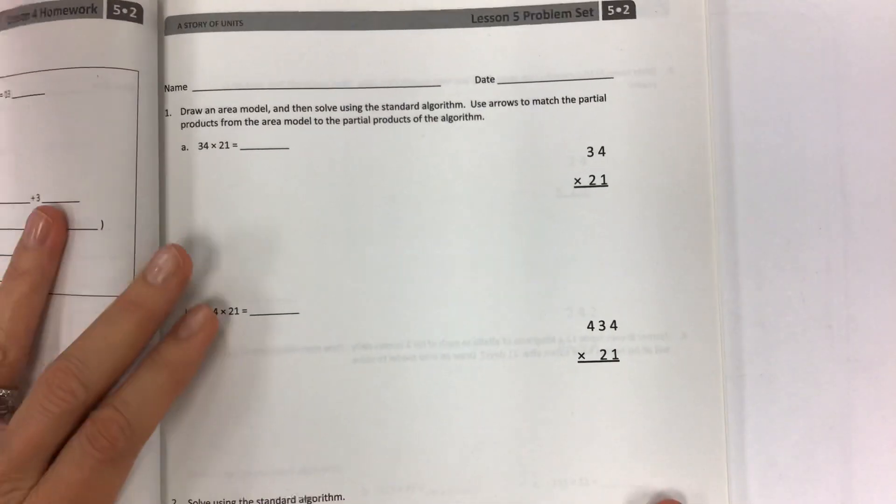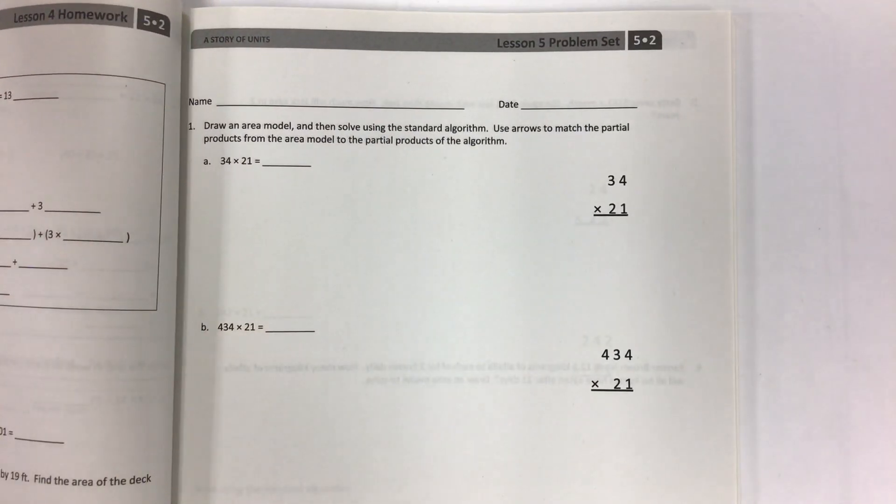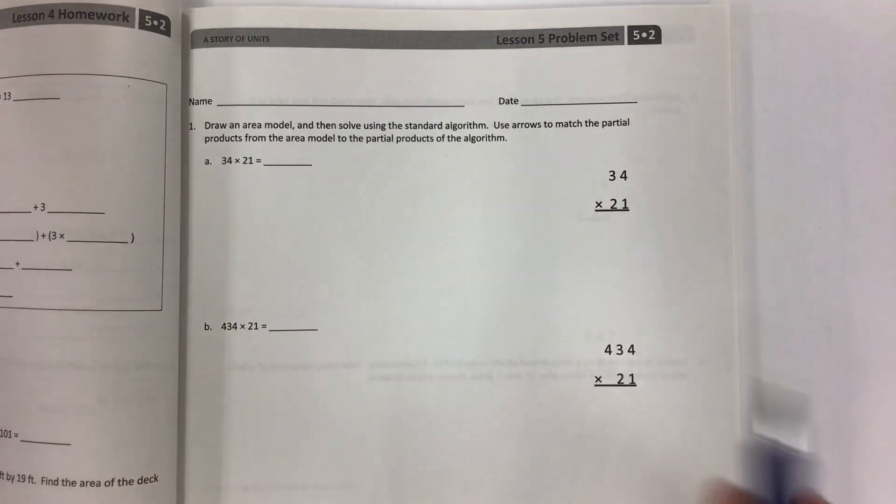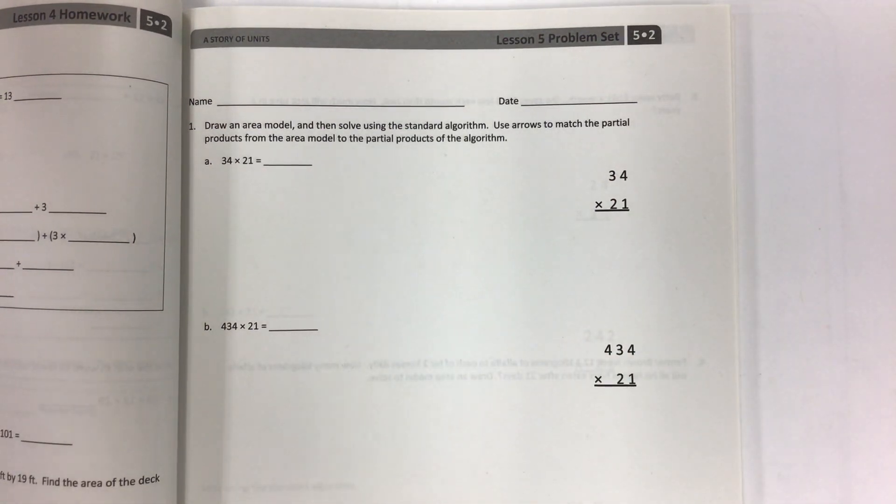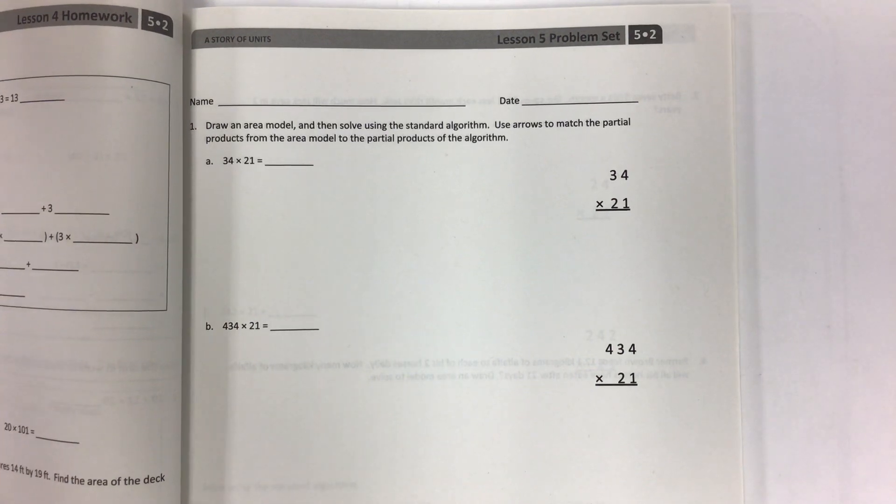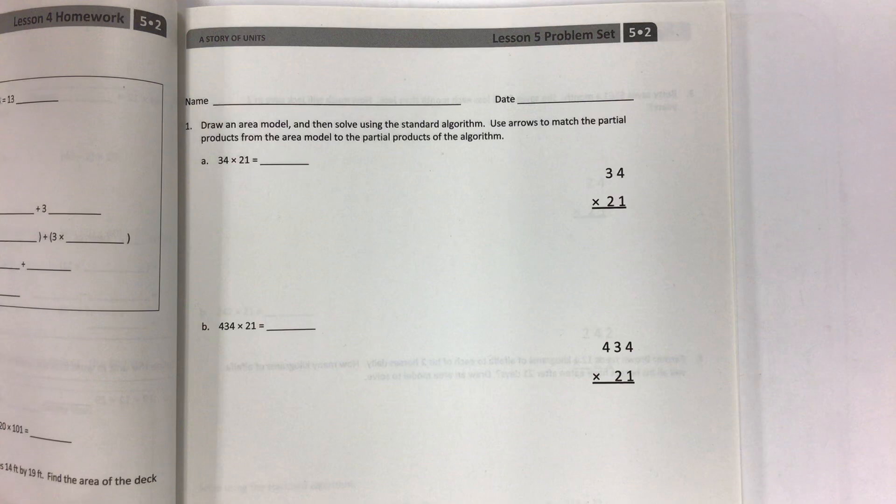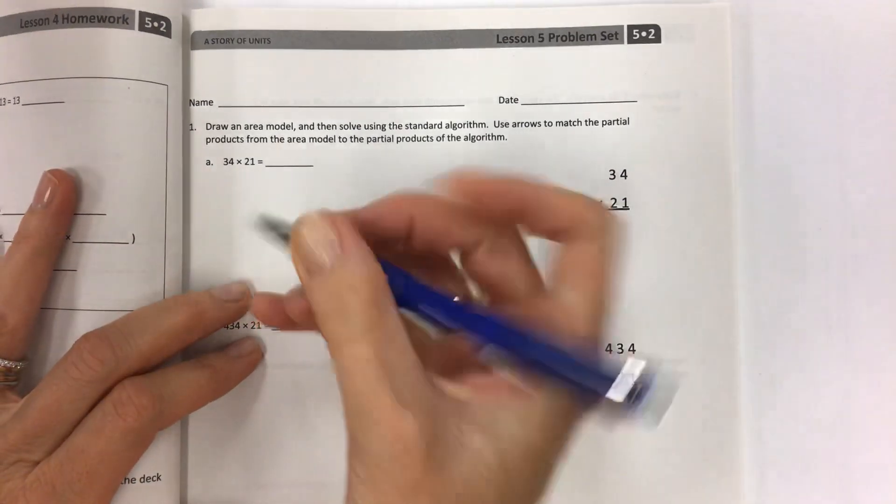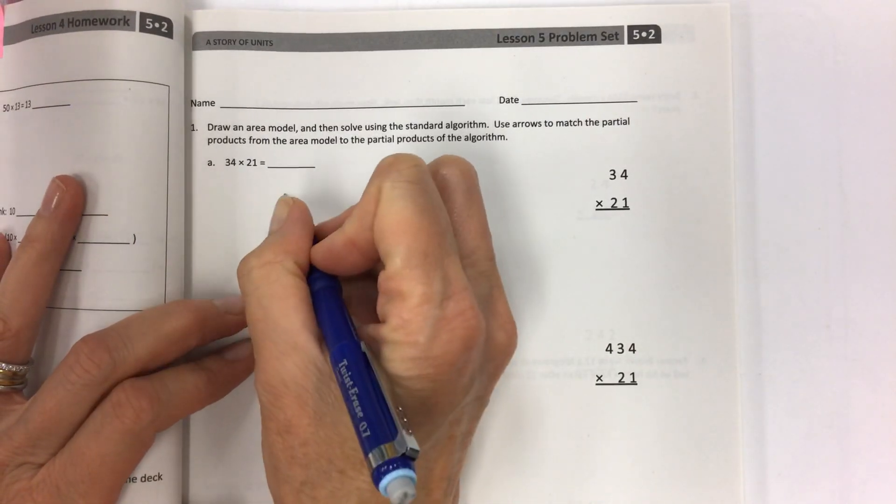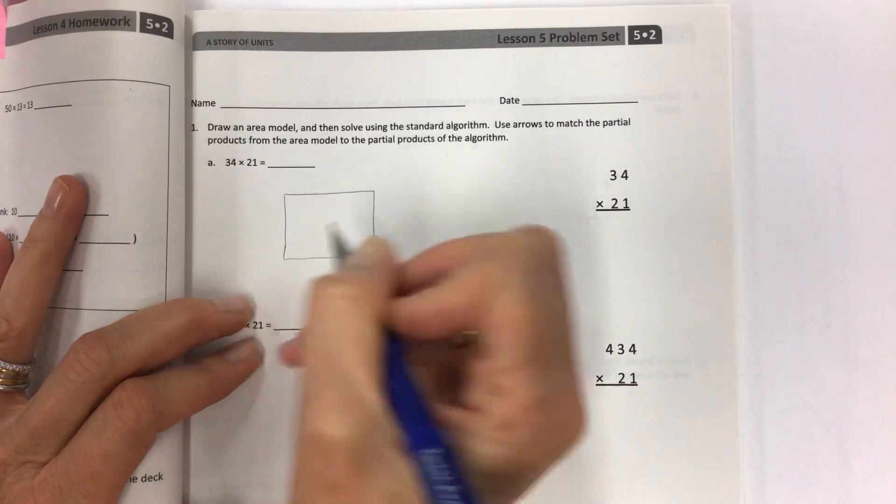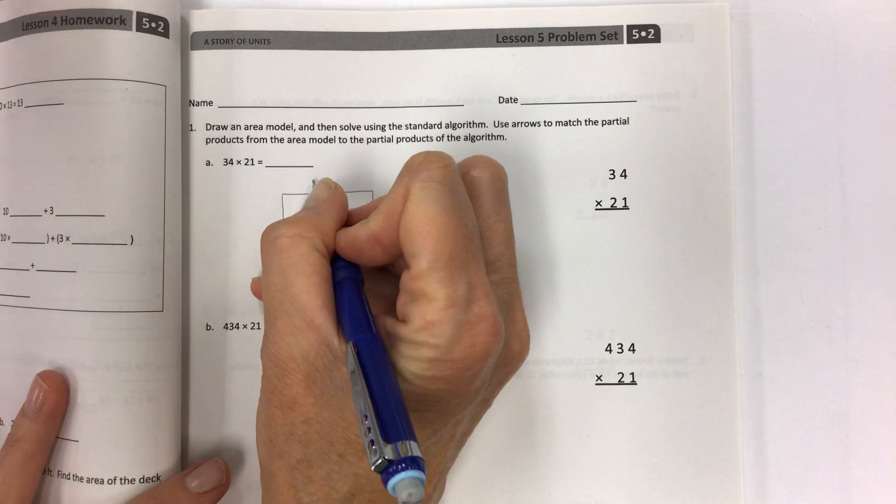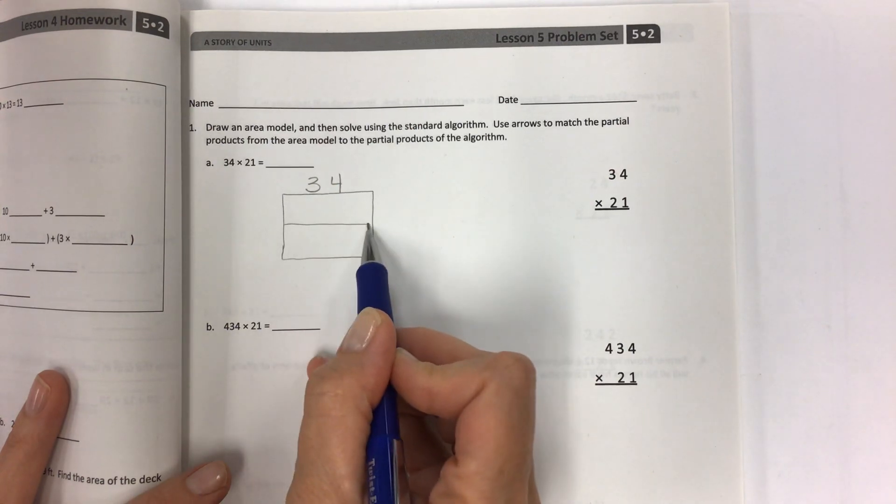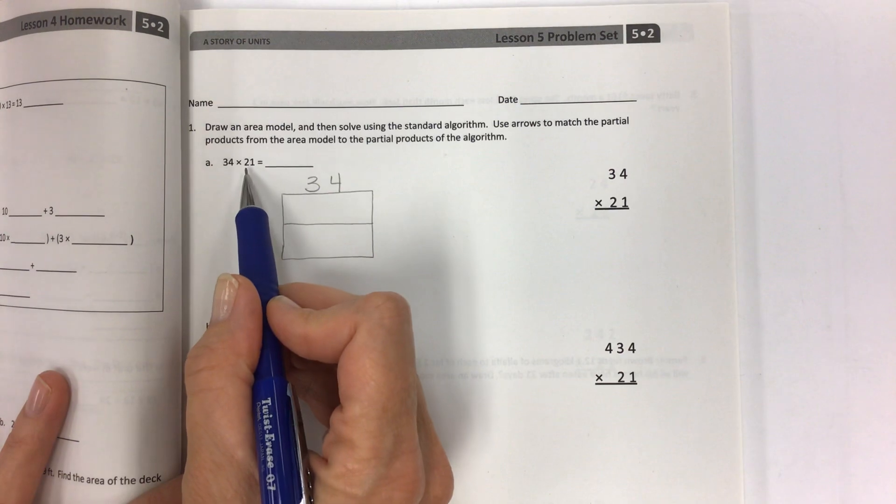So in lesson five we're only working on lesson five today, even though I had a big list for the objective. We're going to draw an area model and then solve it using the standard algorithm, and we're going to use arrows to match the partial products from the area model to the partial products of the algorithm. So let's start out by creating an area model, and these are not like the ones before, so we're only going to have two boxes because we have two factors. We're going to do the first one on the top, so let's just take 34 and put the whole thing up there. But here's where the magic happens. We have 21.